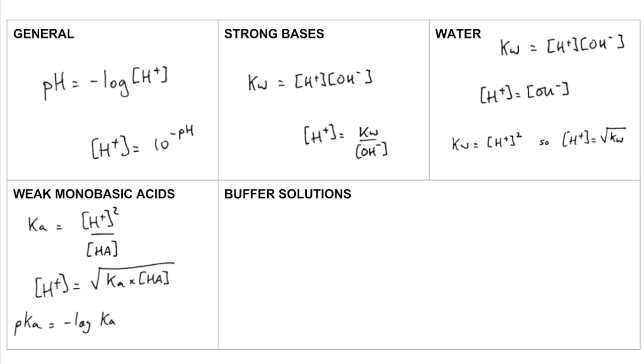Also we might need to find the PKA for the weak acid. So that's minus log of KA. Or we might have to do the reverse of that. So KA is equal to 10 to the minus PKA.